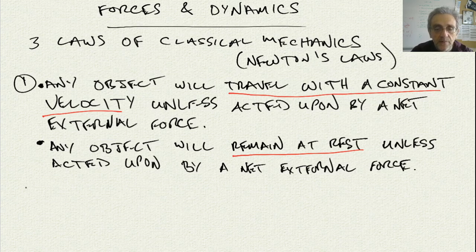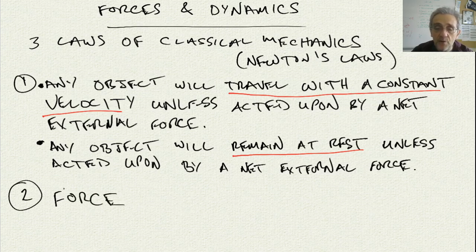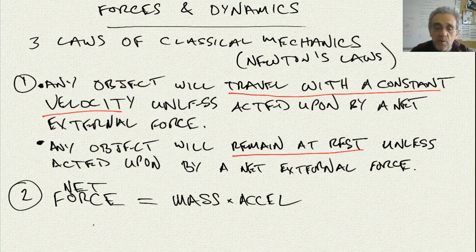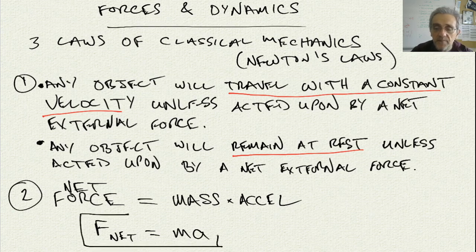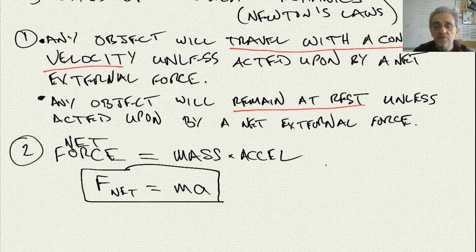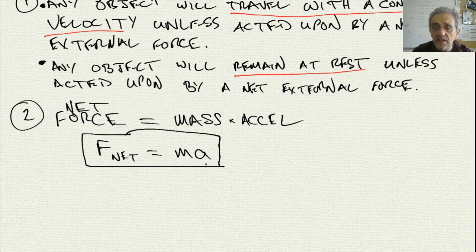Let's move on to the second law. The second law is actually an equation — it states that net force is equal to mass times acceleration. We write this as F_net = MA. This is probably one of the most famous physics equations there is, and it relates how net force and acceleration are related.